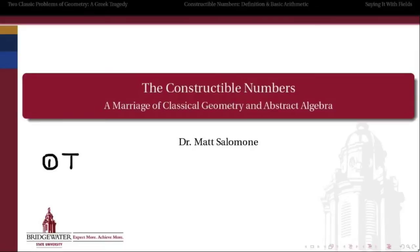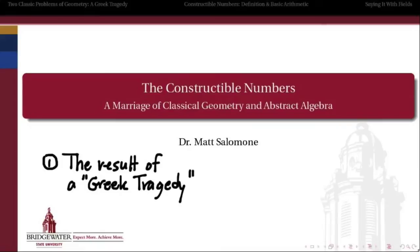So our objectives are, first of all, to get a working definition of what the constructible numbers are by starting with what I call a Greek tragedy, starting with one of the classic questions in all of mathematics and geometry, and seeing how it was kind of answerable by the Greeks, but then not really. And so we're going to use some more modern techniques to answer a question that the Greeks had some difficulty answering.